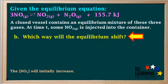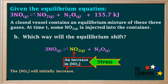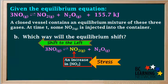Question B asked us which way the equilibrium will shift as a result of the increase in the NO₂ concentration. The stress imposed on this equilibrium is the increase in the concentration of NO₂. According to Le Chatelier's Principle, when a stress is applied to a system at equilibrium, processes will occur to counteract the imposed stress. A shift to the left will counteract the stress by consuming some of the extra NO₂ that was added, so the equilibrium will shift to the left.